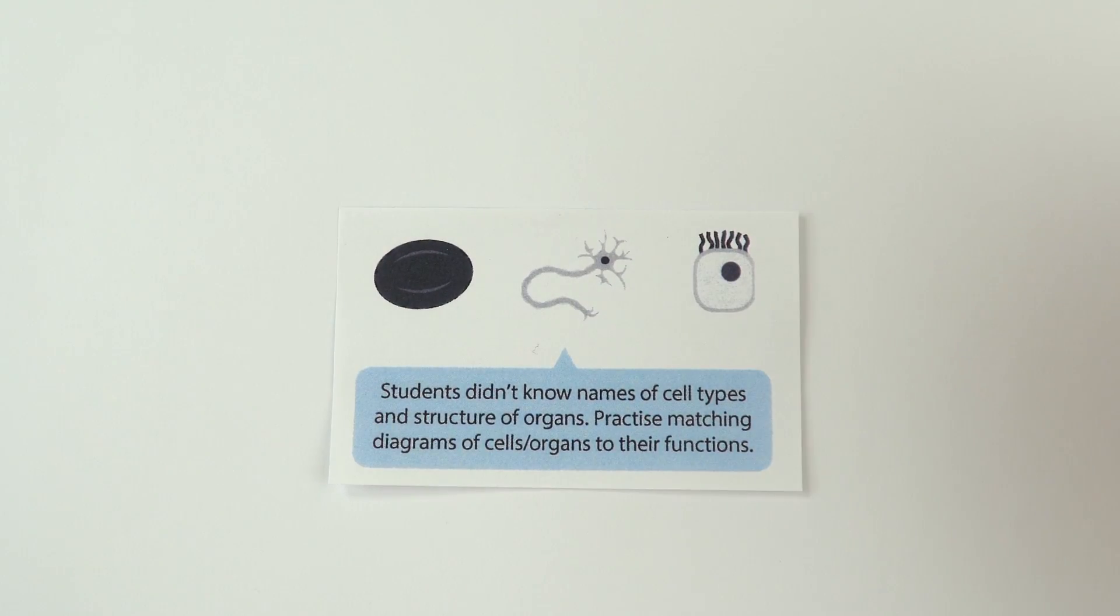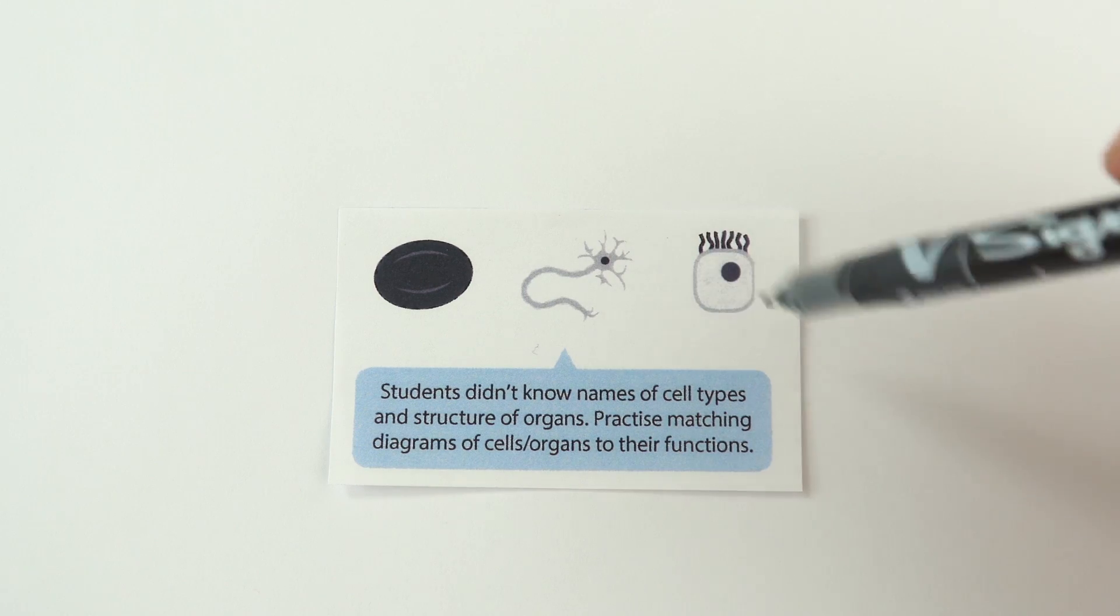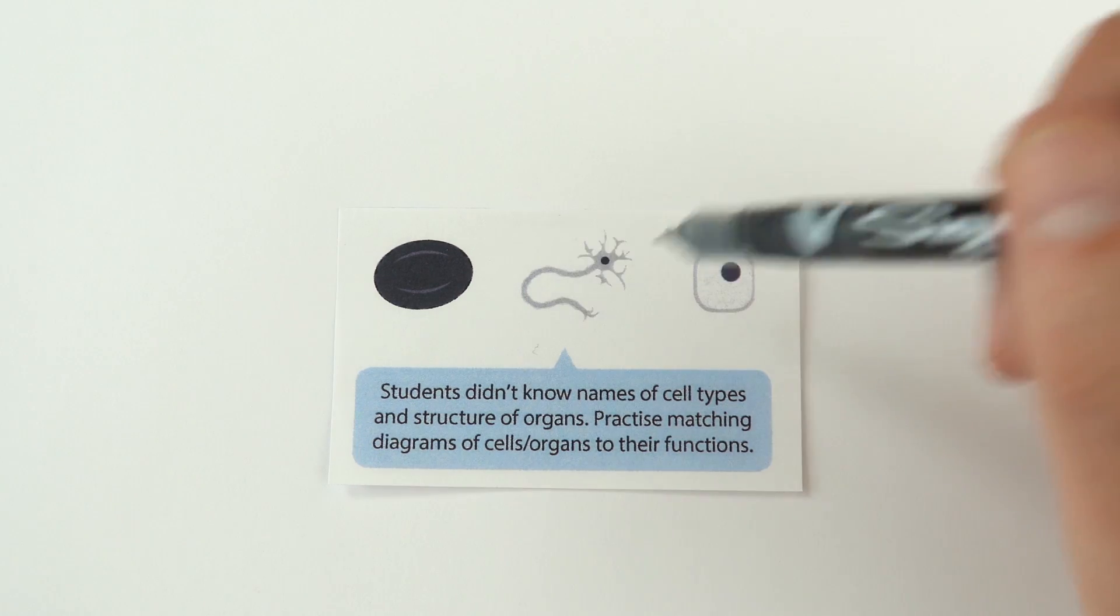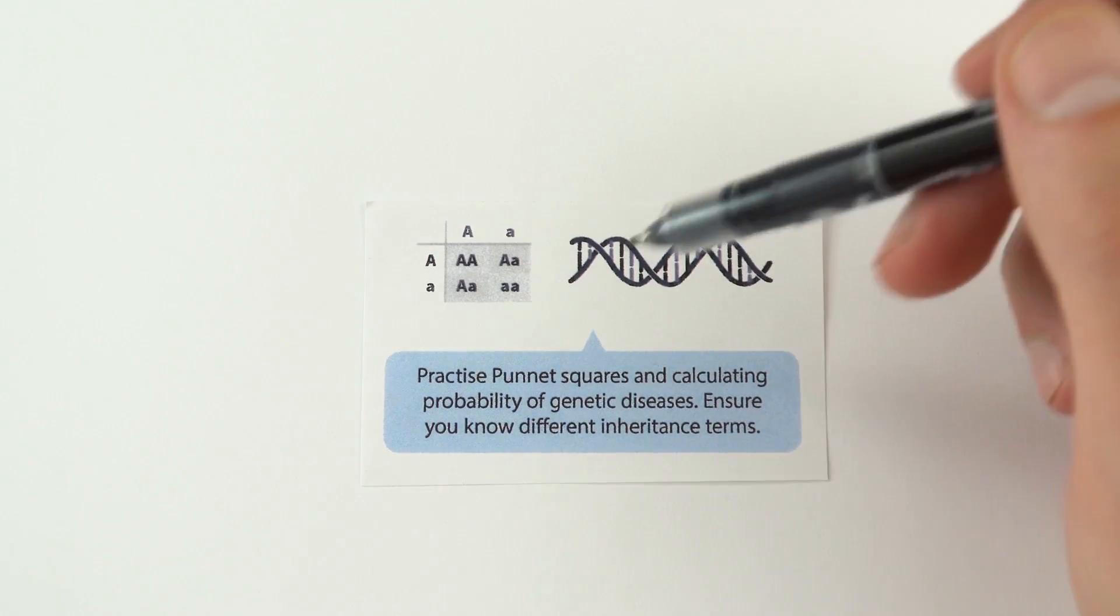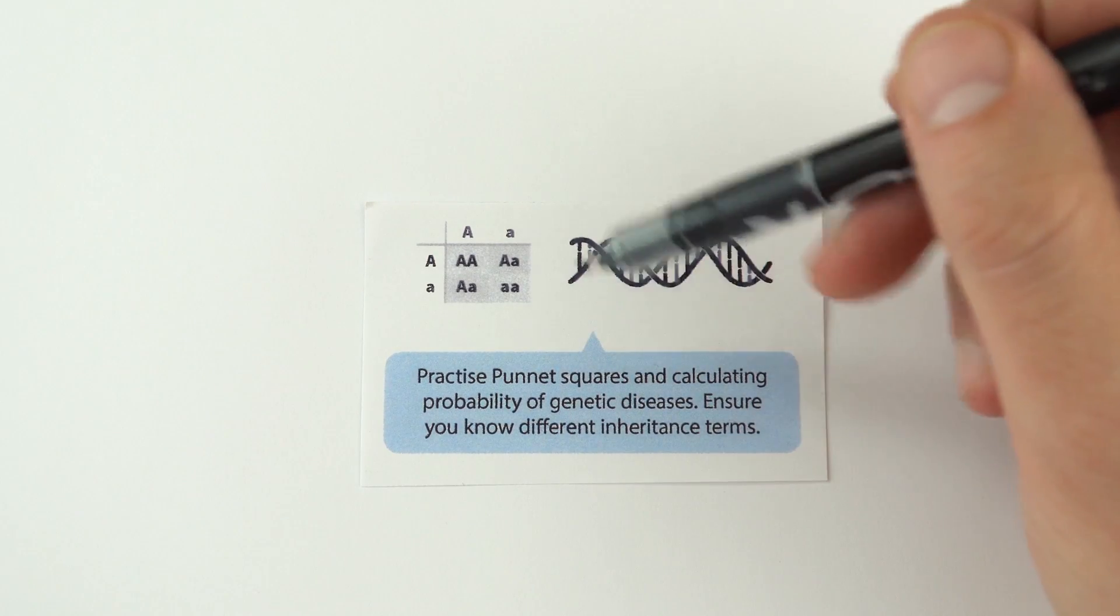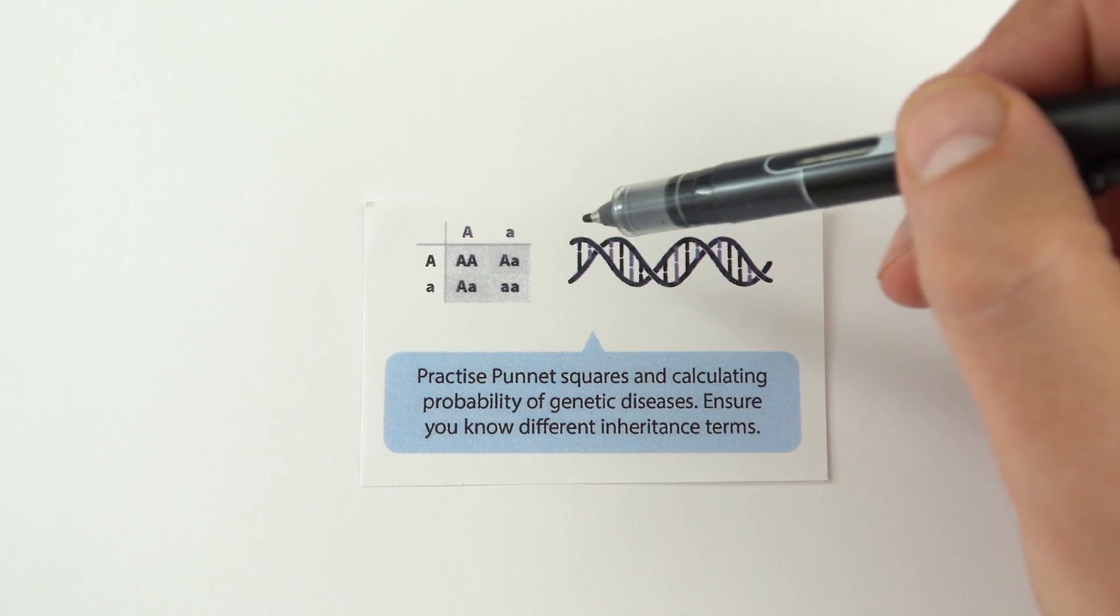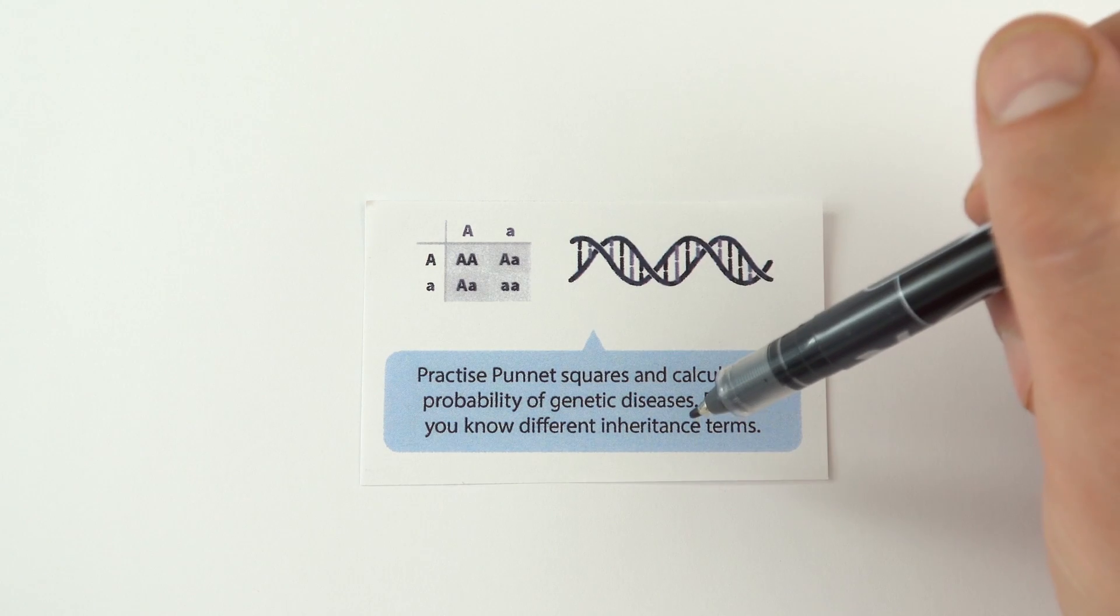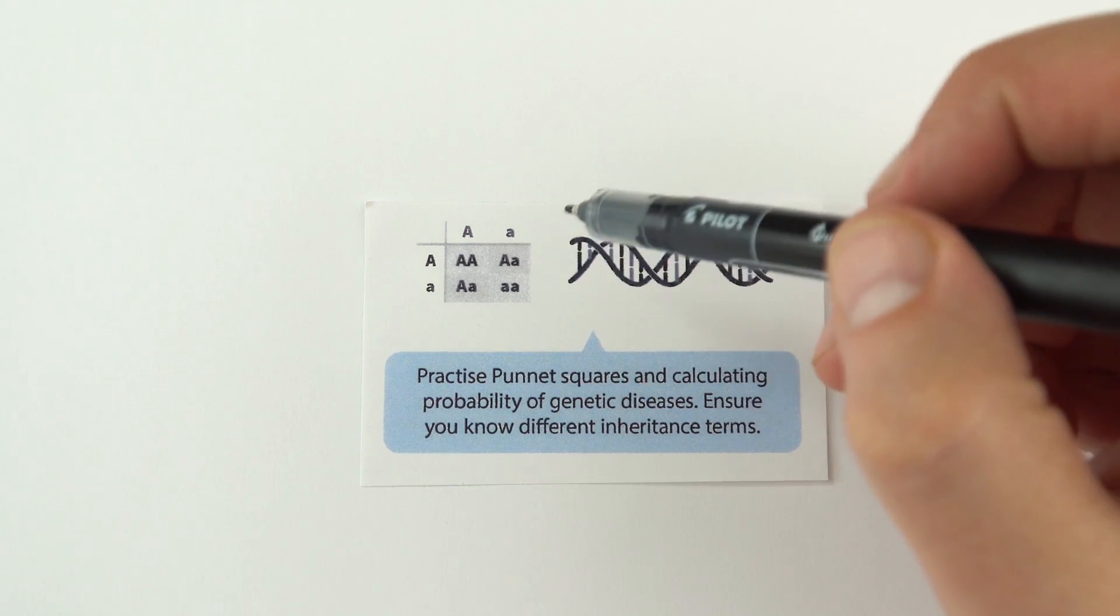Another thing about knowledge is just the names of cell types and the structure of organs. This is the thing where you need to make sure that you recognize the diagrams. When it comes to revising, make sure you've maybe just drawn a quick sketch diagram to show the different sorts of cells and roughly what they look like. Also, when it comes to things like inheritance, practice Punnett squares, and also calculating the probability of genetic diseases. Remember that there's a lot more mathematics now in things like biology and chemistry than there has been in some of the previous older specification past papers. So make sure that you know some of these things. This is just factual knowledge that you can recall. Practice using these squares.